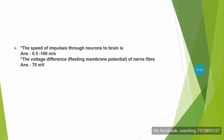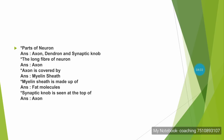The speed of impulses through neurons to the brain is 0.5 to 100 meters per second. The resting membrane potential of a nerve fiber, that is the voltage difference, is 70 millivolts.